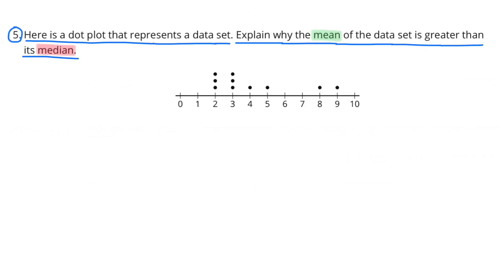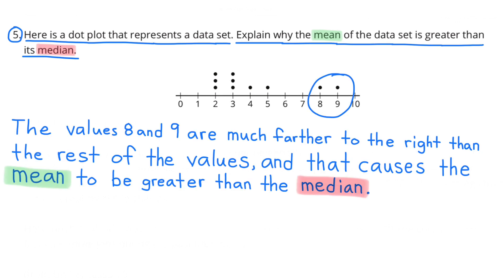Number five: Here is a dot plot that represents a data set. Explain why the mean of the data set is greater than its median. The values 8 and 9 are much further to the right than the rest of the values, and that causes the mean to be greater than the median.